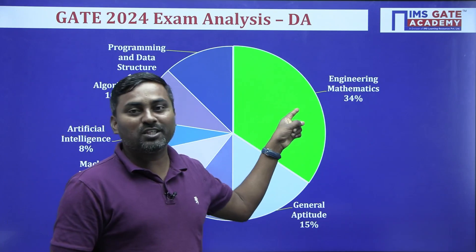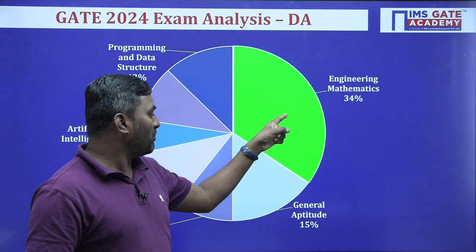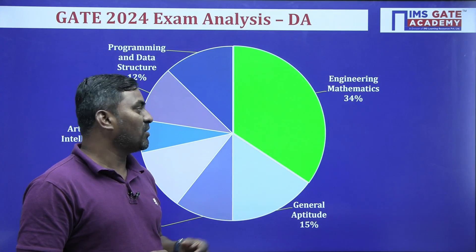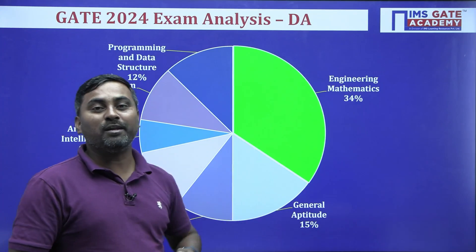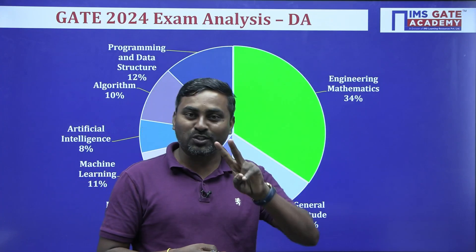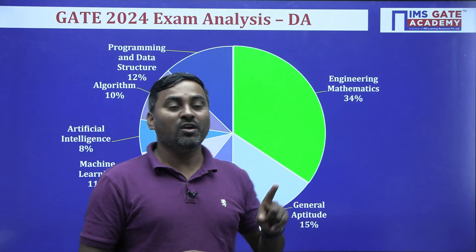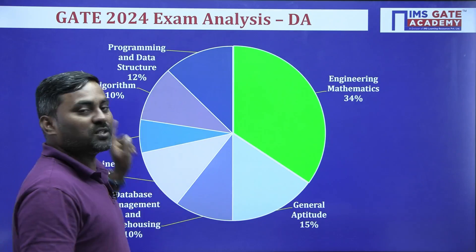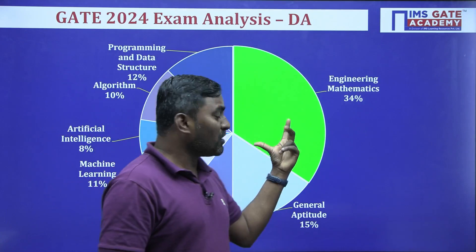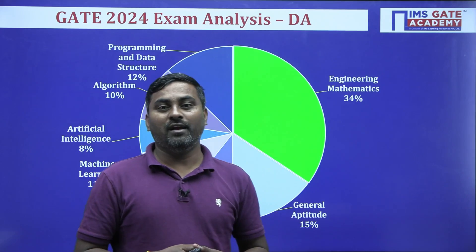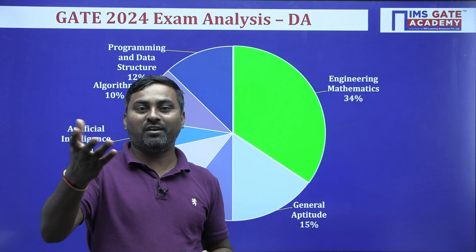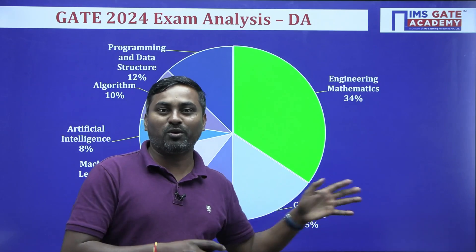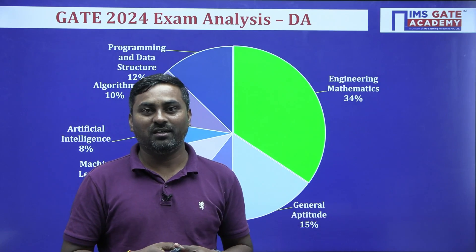Mathematics was 34 marks and General Aptitude 15 marks — so 49 marks from just these two portions, without touching any core course. Especially for other branch students, mathematics weightage is more comfortable compared to core CS topics, so they may have performed well in this paper too.